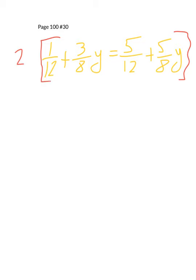Okay, here is another problem from page 100. It is number 30. This problem looks scary because it has all of these fractions in it. We have 1 12th, that's a scary fraction, plus 3 8 y, that's a scary fraction, equals 5 12th, another scary fraction, plus 5 8 y, another scary fraction. Fractions do make things a little more complicated. So the strategy that I always employ whenever I see fractions in equations like this, is I try to multiply every term by the common denominator. When I look at the denominators, 12 and 8, the common denominator is 24. So I'm going to multiply every term by 24.